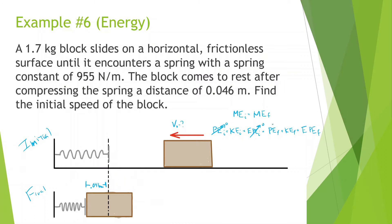Now let's look at the final part. Is there potential energy at the final? No, it's still on the ground. Is it moving? No, it comes to rest after compressing. So kinetic energy is also zero. Is there elastic potential energy? Yes, the spring is compressed. So now let's set these two equal: one half mv squared equals one half kx squared. All this kinetic energy turns into elastic potential energy — energy is conserved.